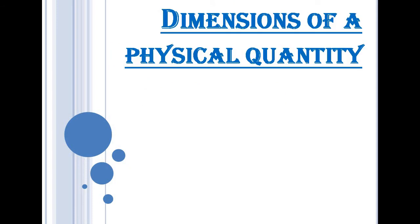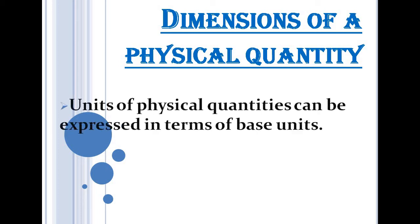Let's discuss the dimensions of a physical quantity. Physical quantities are those quantities which can be measured; there are hundreds of thousands of them. Physical quantities involve base quantities, so units of a physical quantity can be expressed in terms of base units. There are seven base units.